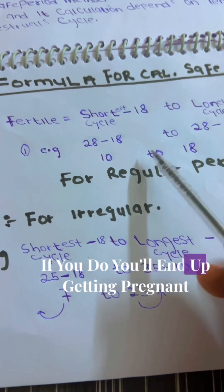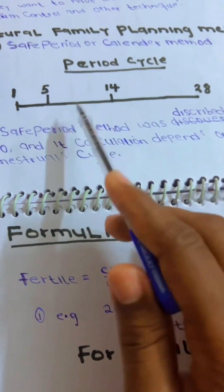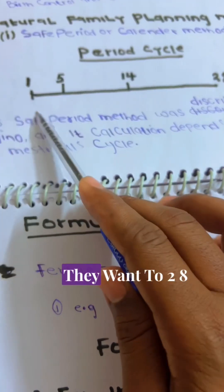If you do, you will end up getting pregnant. But remember, this is the cycle of 28 days, day 1 to 28.